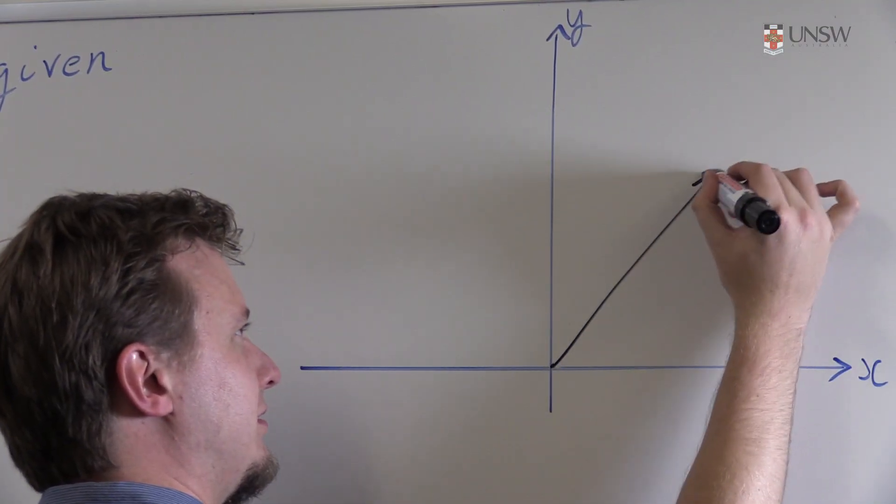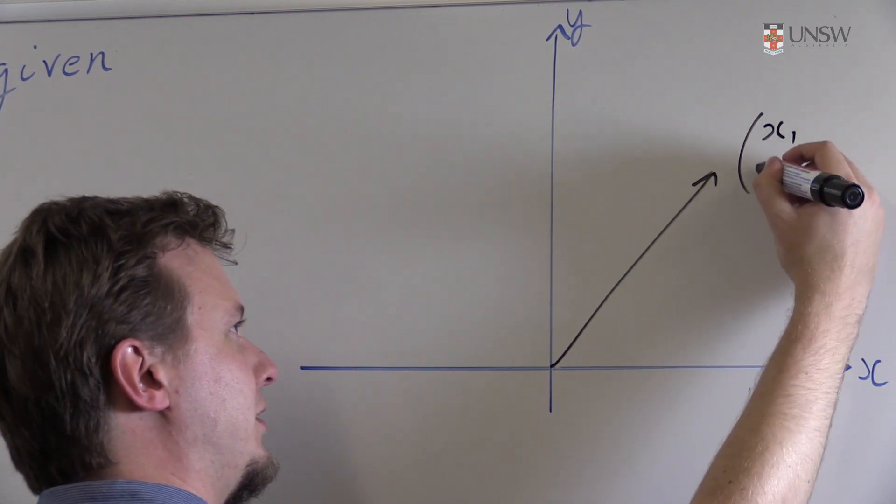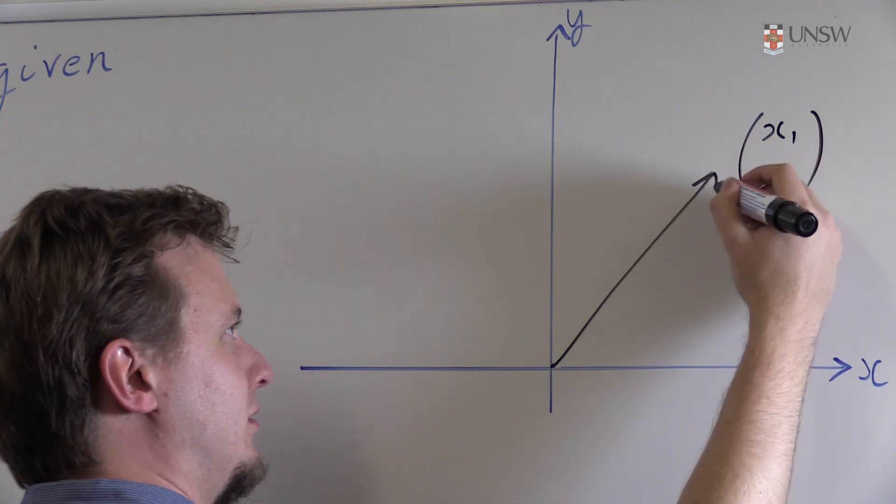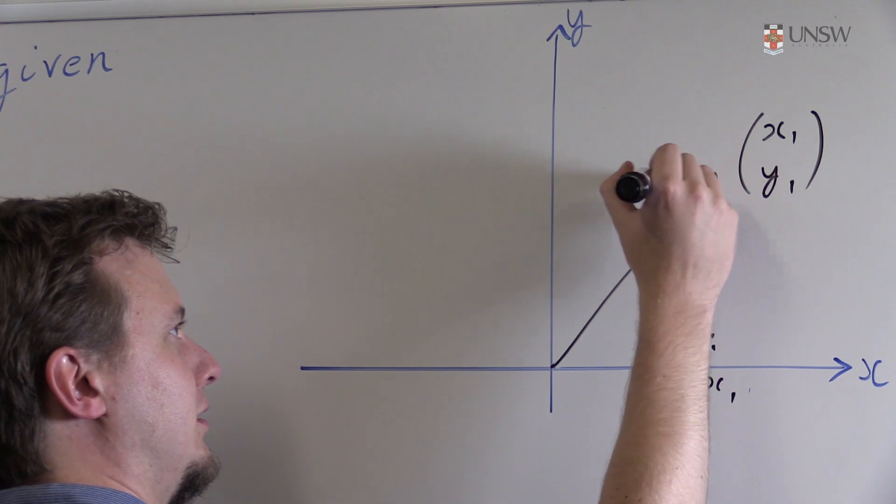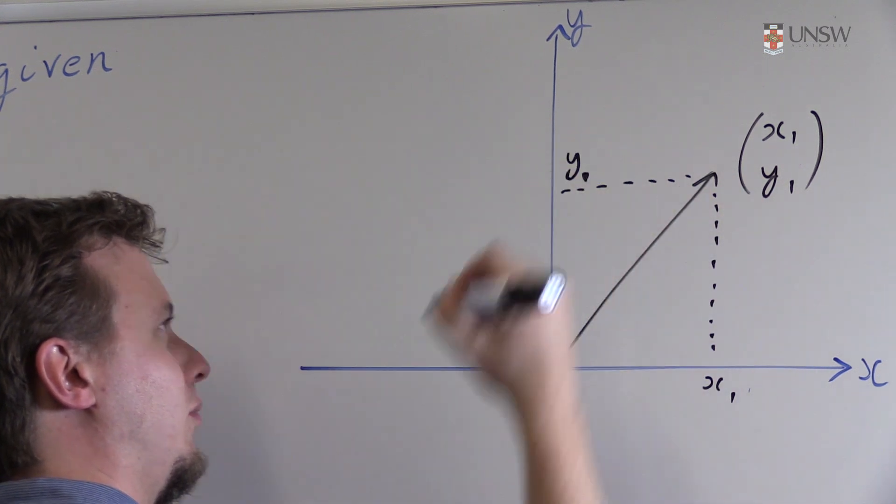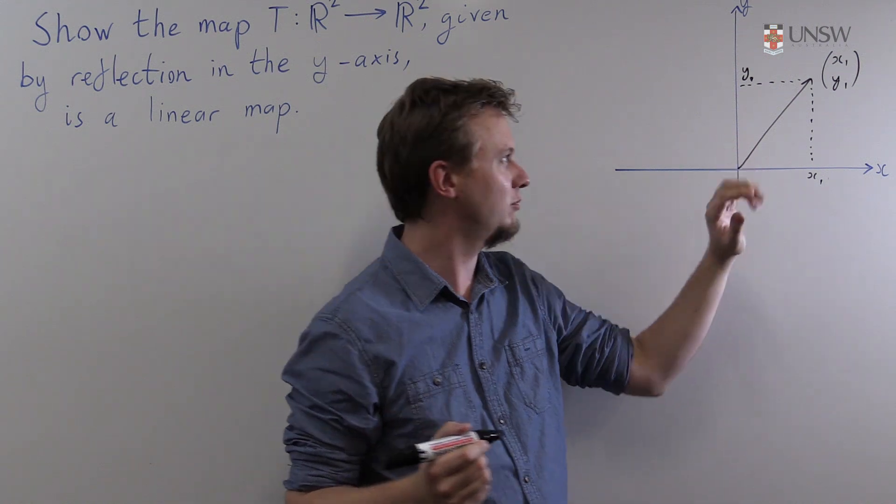So let's take a typical point in R², say the point (x₁, y₁). So if you look at it, the x component is x₁, the y component is y₁, and I want to reflect this in the y-axis. So where is this point?